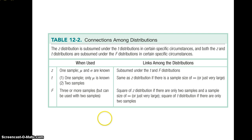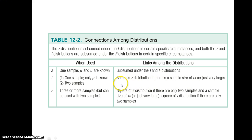Let's talk about connections among the distributions. With the Z-distribution, we know mu and sigma. We approximate those with the T-distribution; because we only know mu and not sigma, the T-distribution is dependent upon sample size. As the sample size approaches infinity, the T-distribution is essentially the same as the Z-distribution. We use the F-distribution when we have three or more samples, though you could use it with two samples — with two samples, the F-distribution is the square of the T-distribution.